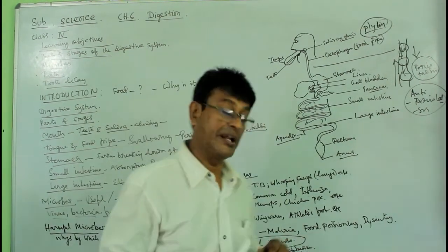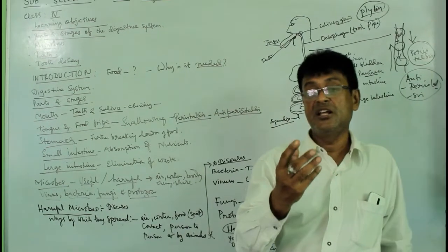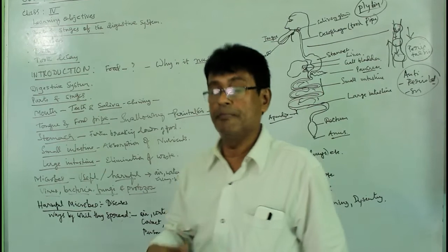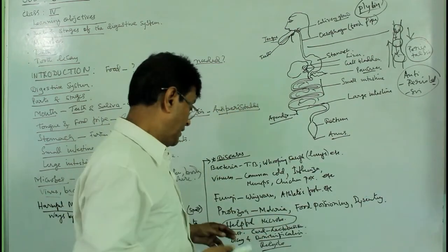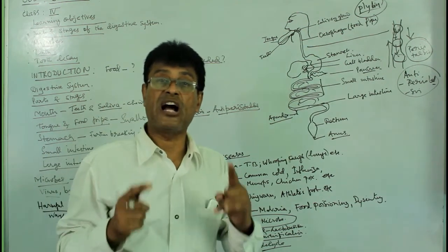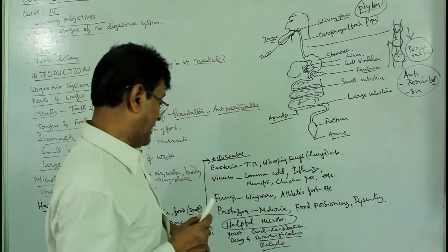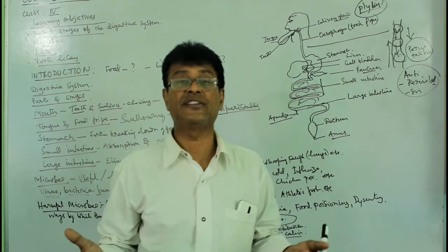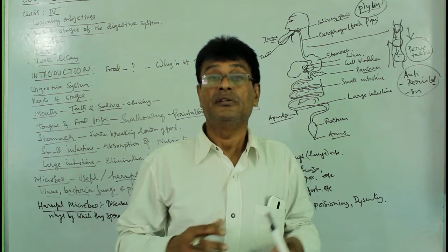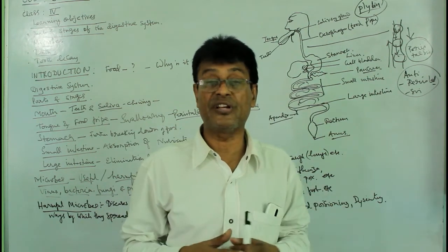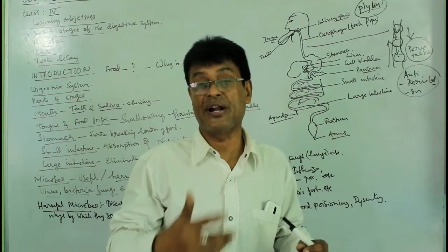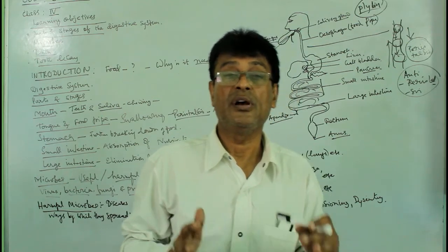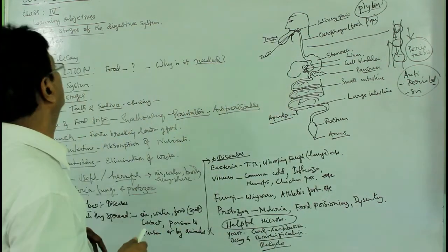There are also helpful microbes. Yeast is used in making bread, cake, wine, and brandy. Curd is produced from milk by a kind of bacteria called Lactobacillus species. On the other hand, many bacteria in the soil help things undergo decay and recycling, cleaning the environment — they are nature's scavengers, maintaining ecological balance.